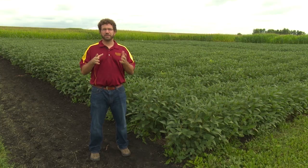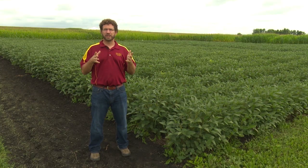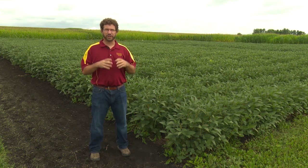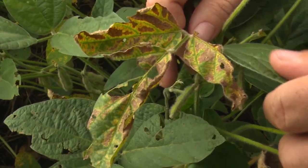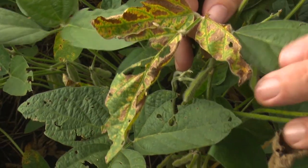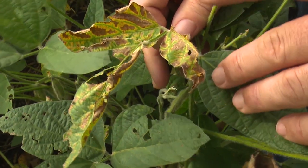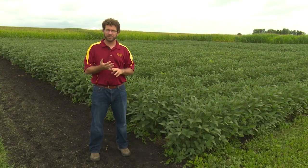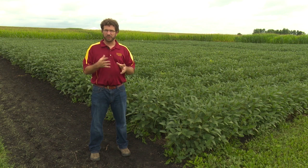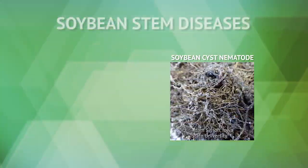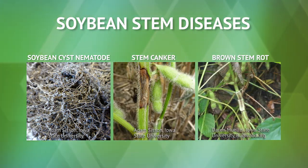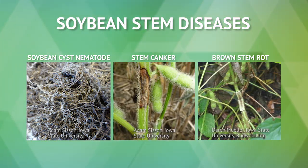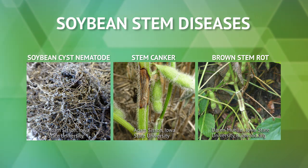Another group of stem diseases you'd encounter while scouting late in the season are those that cause yellow patches. Here in the Midwest, a lot of these yellow patches are blamed on sudden death syndrome, or SDS. But in reality, there are many other things that can cause yellow patches — potassium deficiency, sometimes called top dieback, soybean cyst nematode, stem canker, and brown stem rot.